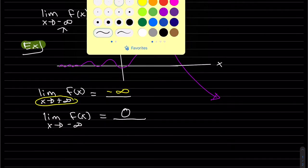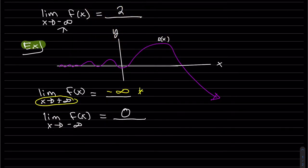Just a note: for this right-side behavior, even though it's negative infinity, this is behavior only — it really is a DNE. A lot of times we find end behavior when we graph. If you remember graphing rational functions and horizontal asymptotes, the horizontal asymptotes are exactly that — it's the end behavior.